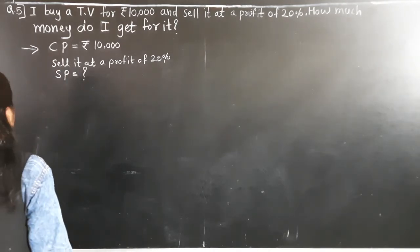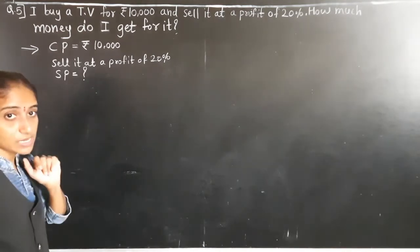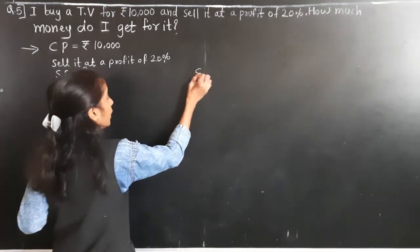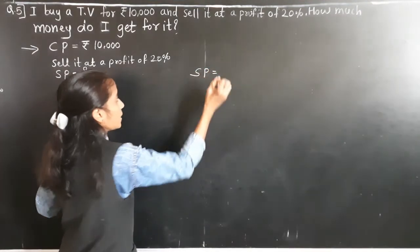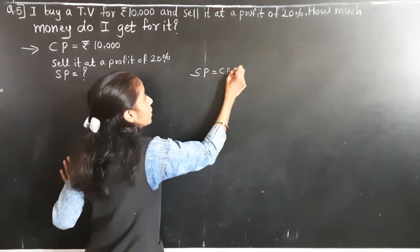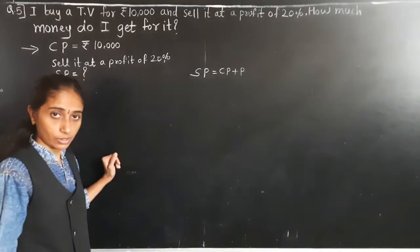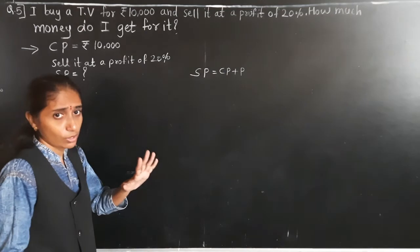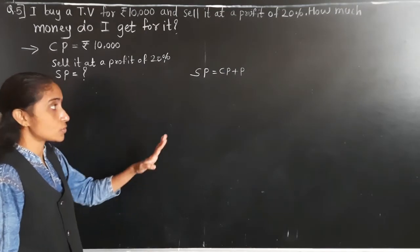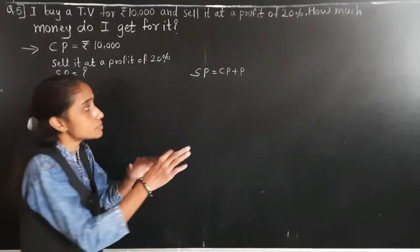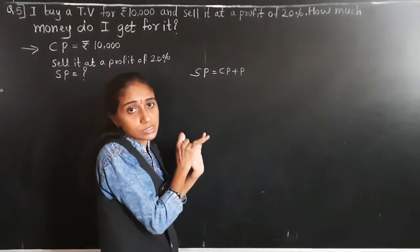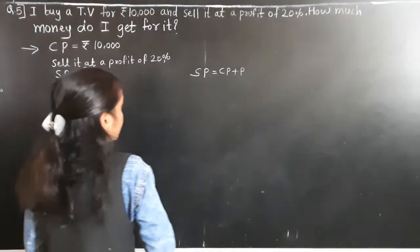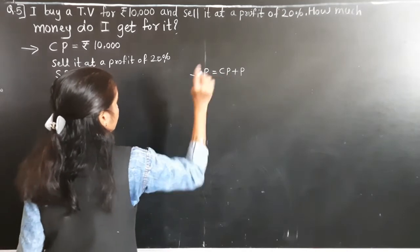For that, the formula is: selling price is equal to cost price plus profit. No need to memorize this separately — you already know the formula for profit: profit is equal to selling price minus cost price. Using the transposition rule, you can derive selling price equals cost price plus profit.